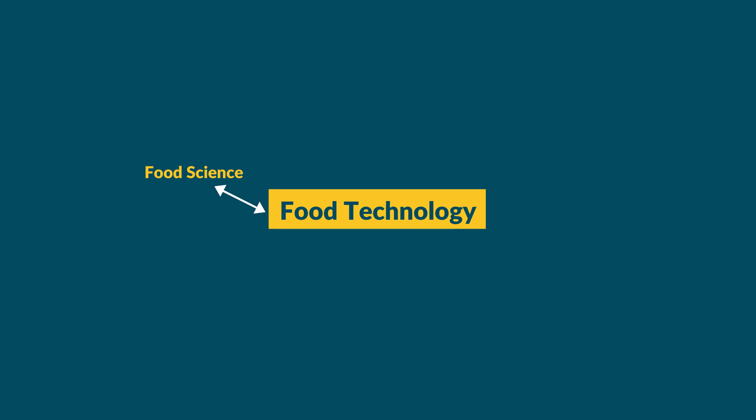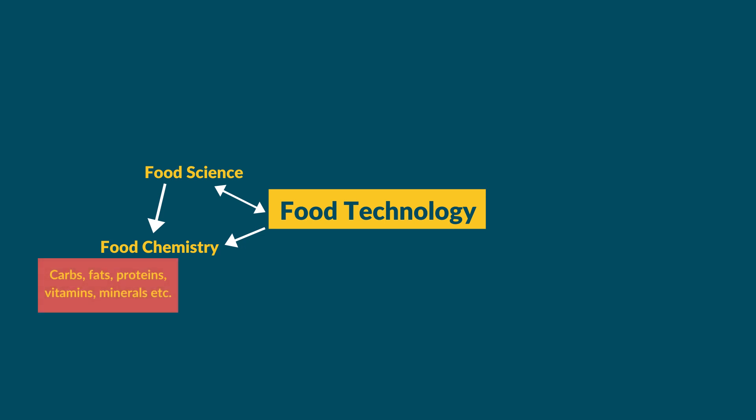Another sub-branch is food chemistry, which lies under both food science and food technology. Many students are scared of the word chemistry, but food chemistry is very easy compared to the organic chemistry studied in class 11th or 12th. Food chemistry basically includes carbohydrates, fats, proteins, vitamins, minerals — the macromolecules and micromolecules present in food — as well as the different reactions that occur in carbohydrates, fats, and proteins. Food chemistry is a very basic subject usually studied in your first year, perhaps in your second semester.